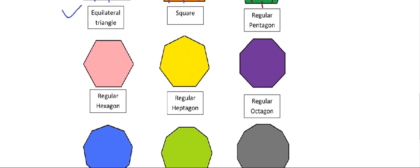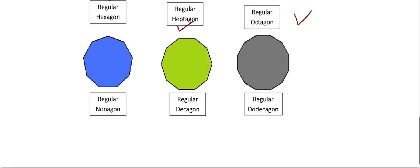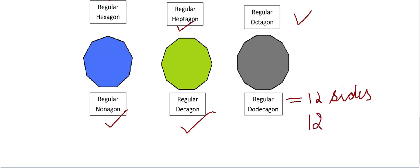A regular hexagon has all sides equal and all angles obtuse. A regular heptagon has seven sides, all of the same measure, and all angles obtuse. A regular octagon has eight sides, eight corners, and eight angles — all obtuse. A regular nonagon has nine sides and a decagon has ten sides. A dodecagon means twelve sides and twelve corners, and it is also regular.